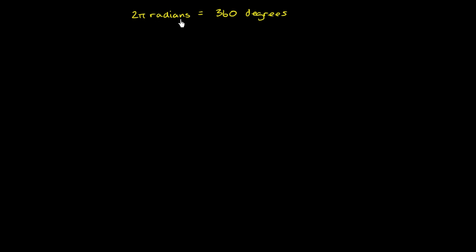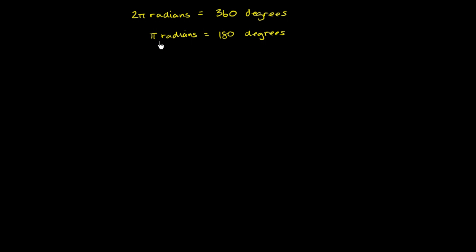If we want to simplify this a little bit, we can divide both sides by 2. And you get π radians are equal to 180 degrees. Another way to think about it: going halfway around a circle in radians is π radians, or the arc that subtends that angle is π radians. And that's also 180 degrees.